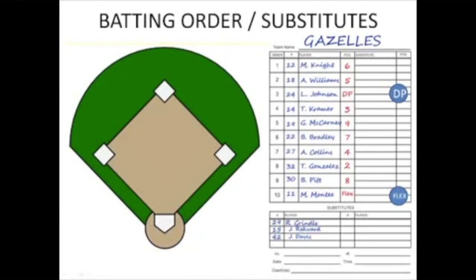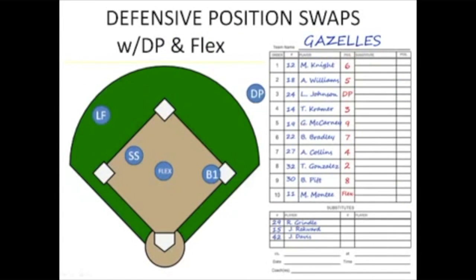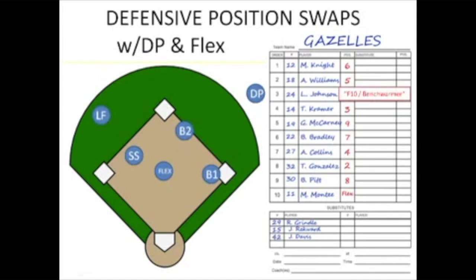Either the DP or the flex can be substituted for in the usual ways by other players, but the substitute takes on the position of the DP or flex, depending on who she's substituting for. As with any lineup, defensive position swaps are not substitutions. The DP starts at the defensive position of F10, benchwarmer. This means you can swap the DP with any player other than the flex on defense and no one has left the game — it is not a substitution. The player removed from defense continues to bat in her normal place in the batting order. The flex can also be moved from her starting defensive position to any other defensive position except F10 — the DP — and she remains the flex and it is not a substitution.